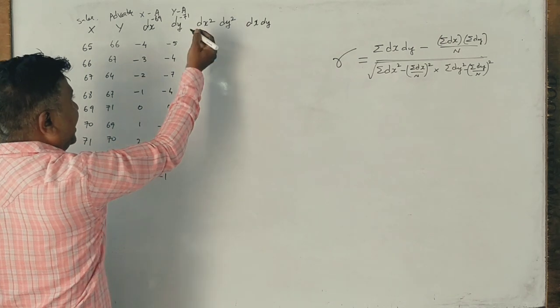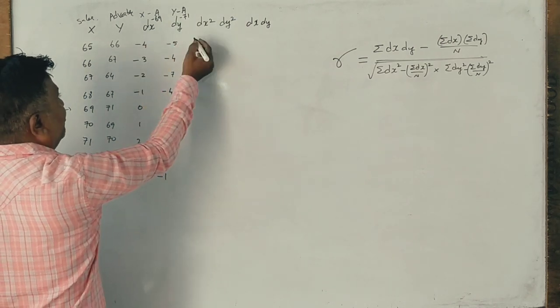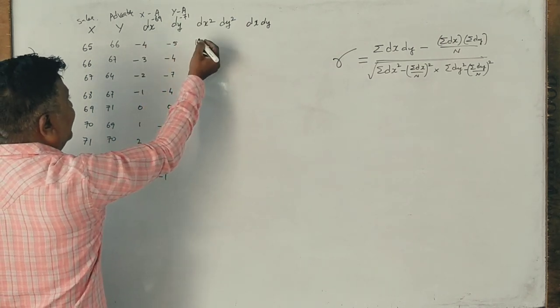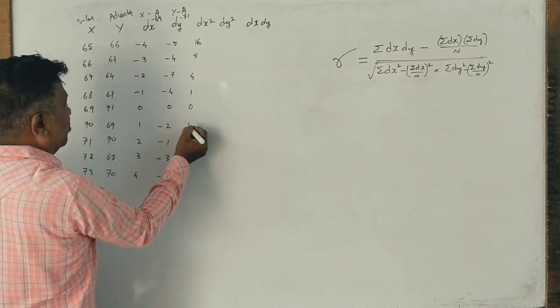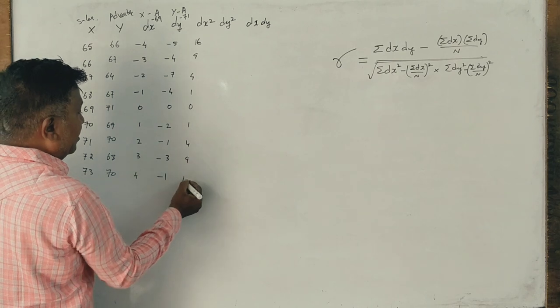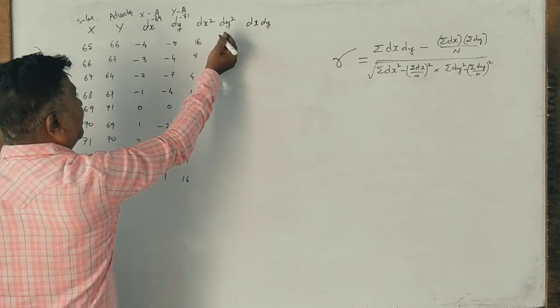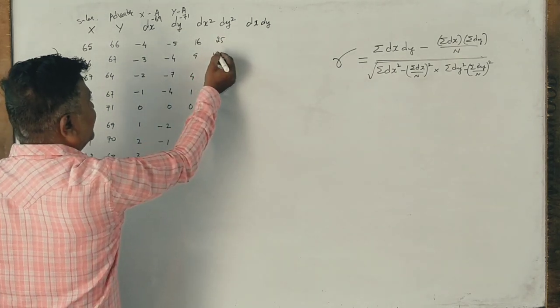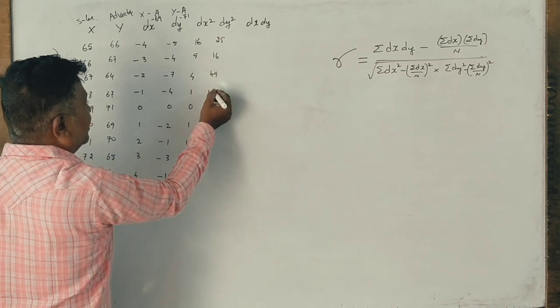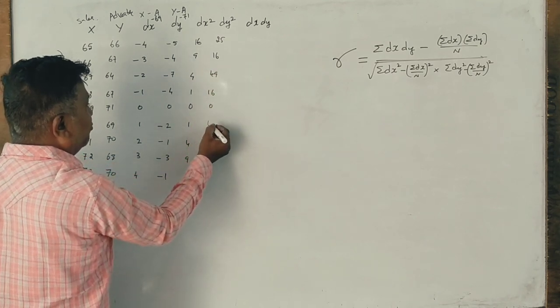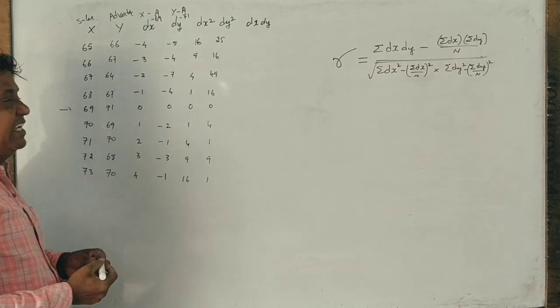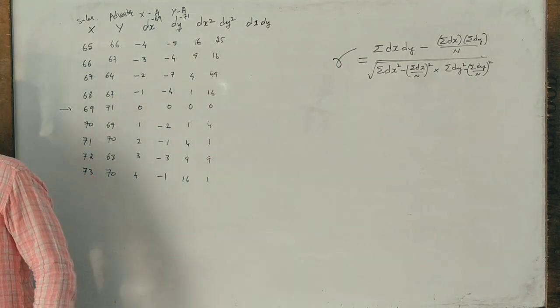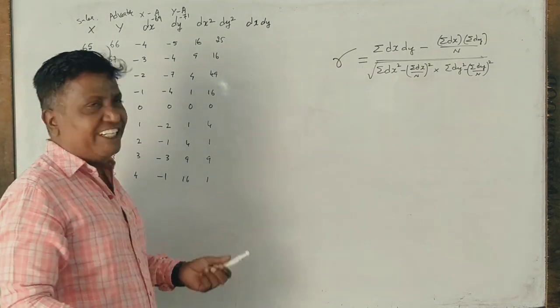This is dx square. x square is 4, 4 is 60, 3, 3 is 9, 4, 2 is 4, 1, 1 is 1, 0, 1, 4, 9, 60. 5, 5, 25, 16, 49, 16, 0, 4, 1, 9, 1. This is very important.